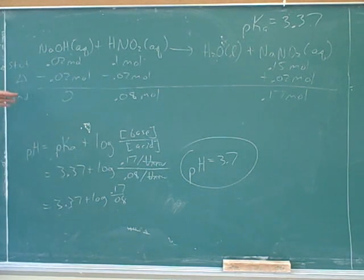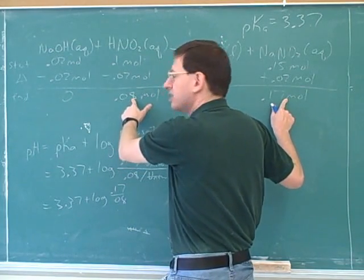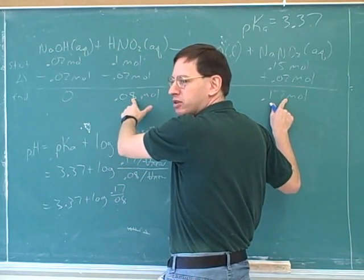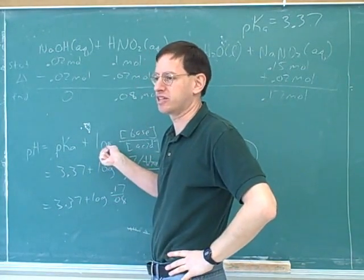In this case, we had both the weak acid and the weak base and another strong base. So first of all, we used the ice table. But notice, after we used the ice table, what did we end up with? We ended up with the weak acid and the weak base. So now we have a whole new problem. Now we have a new problem where we have a weak acid and a weak base, and we know for that we use the Henderson-Hasselbalch equation.